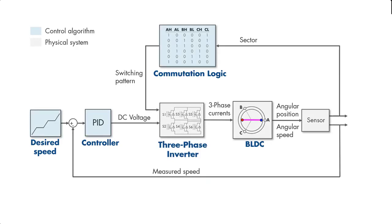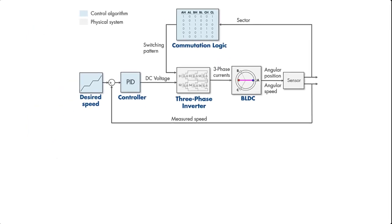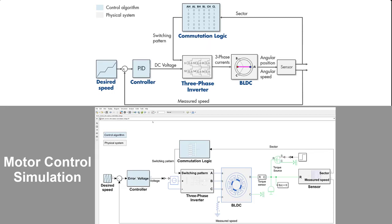Here, note that the commutation logic also belongs to the control algorithm, which is shown with light blue on the diagram. And all the components of the physical system are shown with light gray. Such a motor control algorithm can be implemented in a simulation environment as seen here.